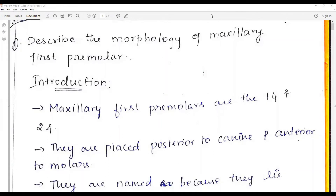Welcome back to 'One Question a Day.' The question today is to describe the morphology of the maxillary first molar. This is a very important essay question — most university exams for oral histology include at least one tooth morphology question, commonly from the maxillary first molar, maxillary second premolar, mandibular molars, or mandibular premolars. Among four or five teeth covered, one is repeated very often in exams.